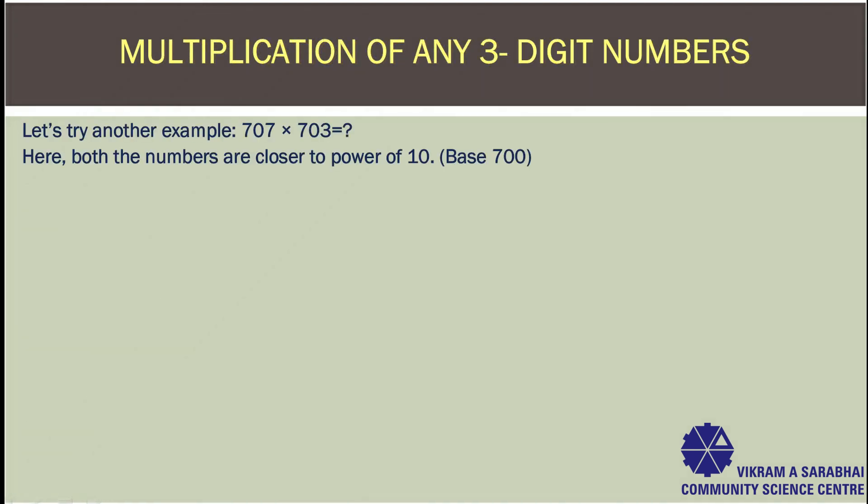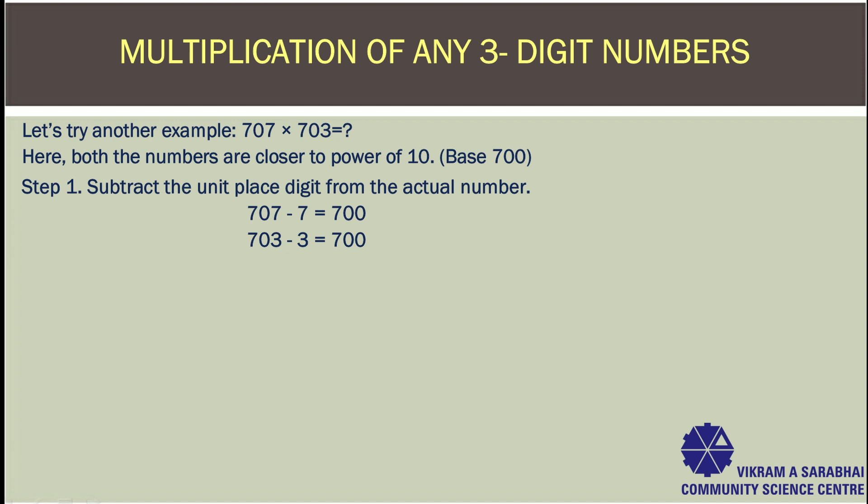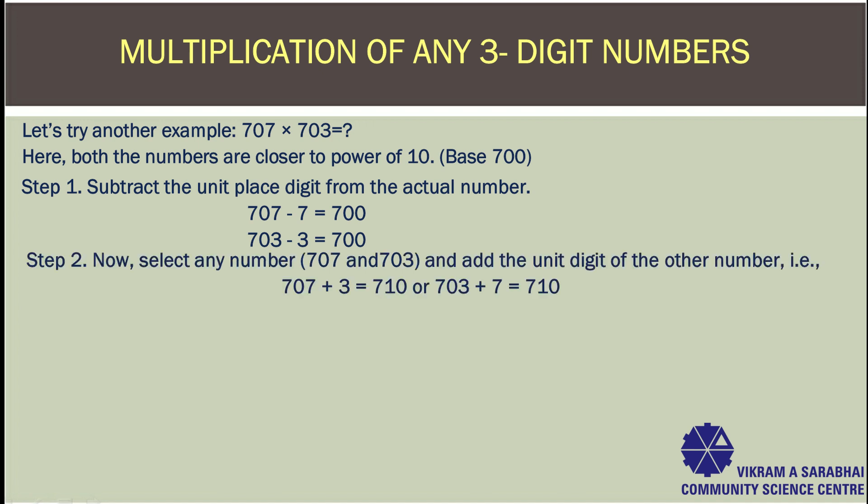Let's try another example. What will you get when you multiply 707 with 703? Here both the numbers are closer to a power of 10, and the base is 700. Step 1: Subtract the unit place digit from the actual number — 707 minus 7, you get 700. Step 2: Select any number — 707 or 703 — and add the unit digit of the other number. So 707 plus 3 from 703, we get 710. Or 703 plus 7 from 707, we get 710.